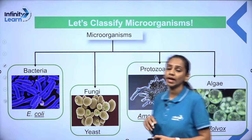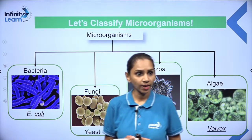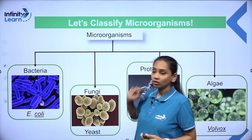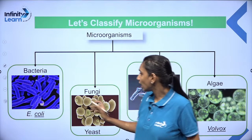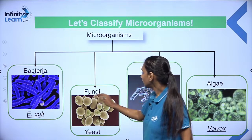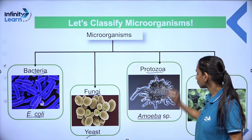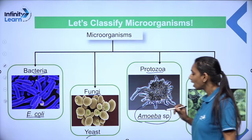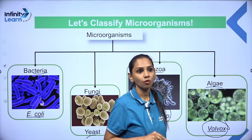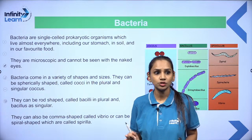Let us see the classification of microorganisms. Microorganisms are classified into: bacteria — for example, E. coli; fungi — for example, yeast; protozoa — for example, amoeba; and lastly algae — for example, volvox. Let us see one by one the categories of microorganisms.